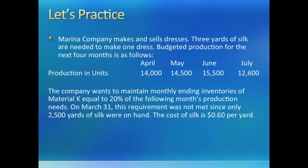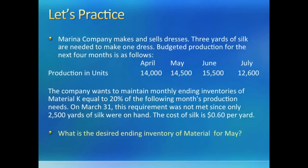This next problem is about the material budget. We are given production in units, inventory needs, and the cost of raw material. The question wants you to calculate the desired ending inventory for May. So you need May production, May's beginning and ending inventory, and material cost. You may want to take a whack at it before you turn the slide.